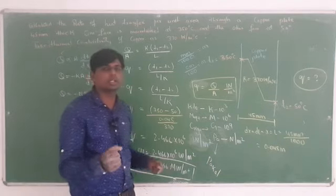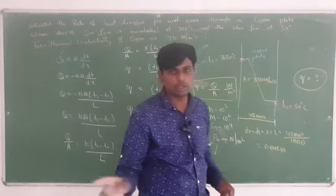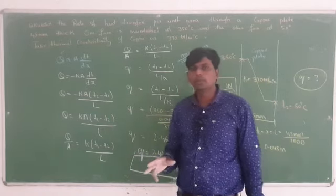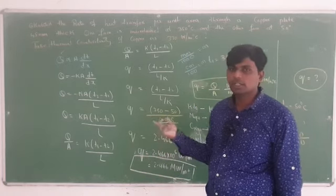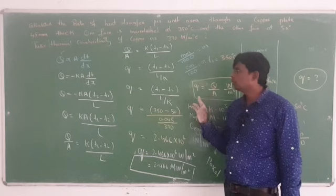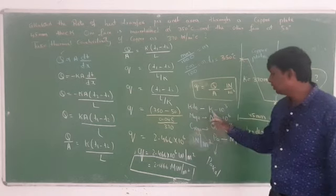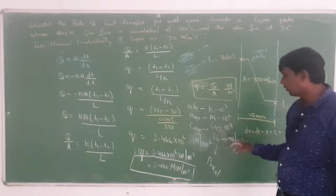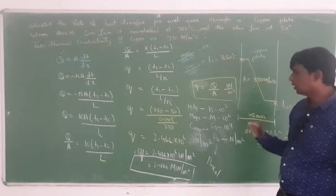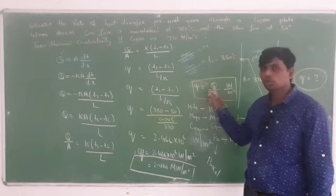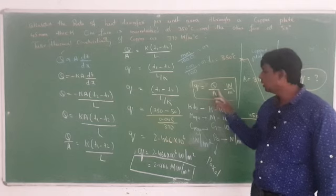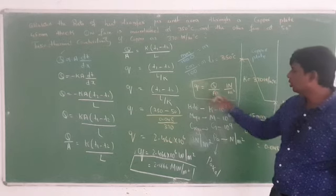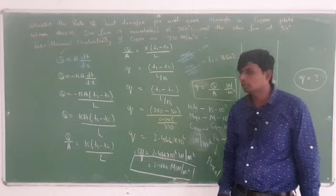If you know how to derive each step you will get full marks. You can substitute values at any step depending on what the question asks. Remember: small q unit is watt per meter square, capital Q is heat transfer (watt), small q is rate of heat transfer (watt per meter square), and A is area (meter square).